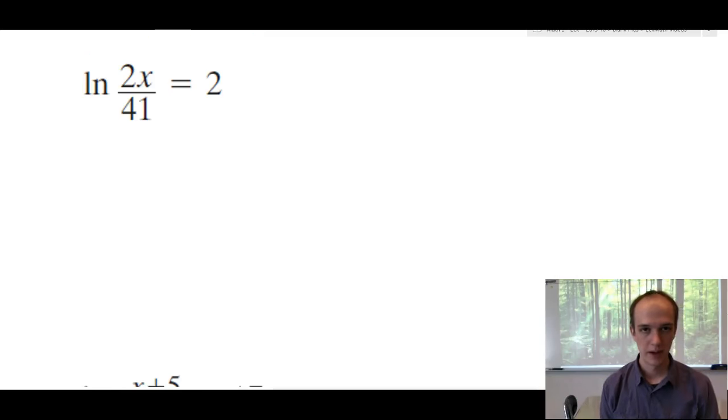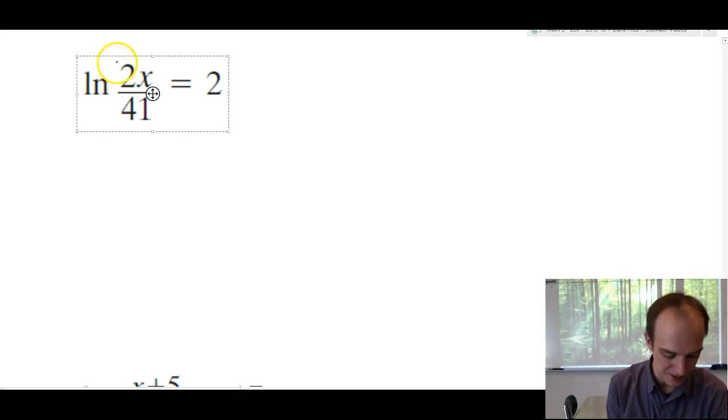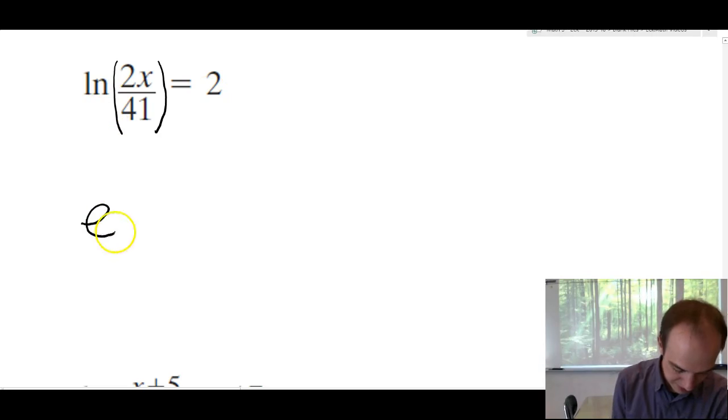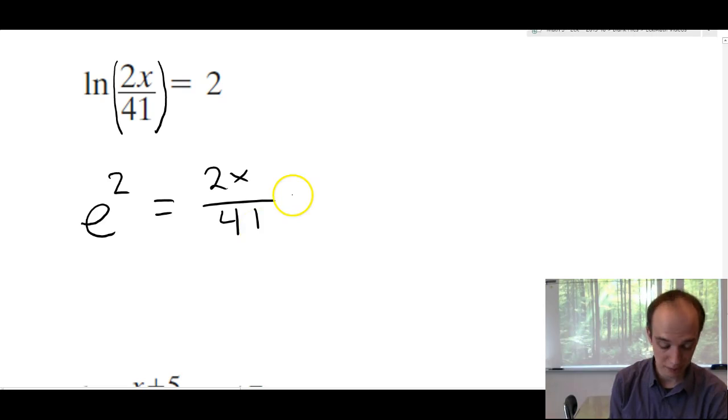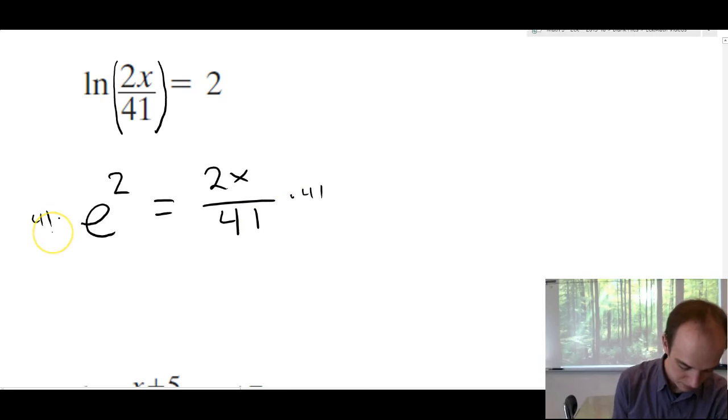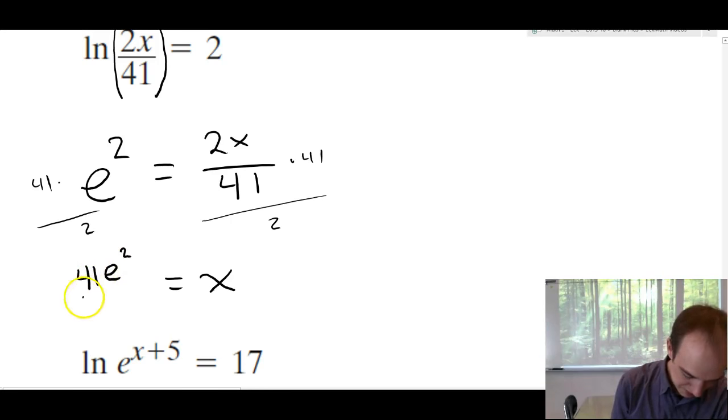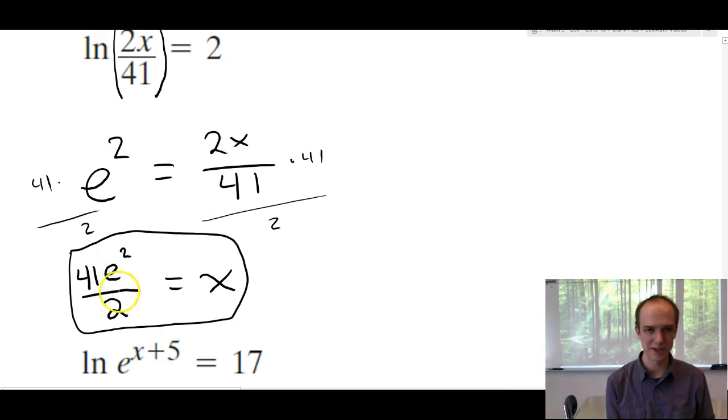Next problem. I do have a little beef with the problem writers here. I think they should have included some parentheses, but this entire term is inside of the natural log. So, we're going to have to deal with the log first. There's nothing out here. There's nothing back here. We're just going to deal with the log. So, this is log base e. So, this is going to be e to the second is equal to 2x over 41. We'll solve this by multiplying by 41 and then dividing by 2. So, as a final answer for x, we're going to get 41 e squared over 2. I'm not even going to bother to evaluate this in the calculator. This is a much nicer answer. Just leave it like this, unless you were doing a word problem and you needed to get this as a value.